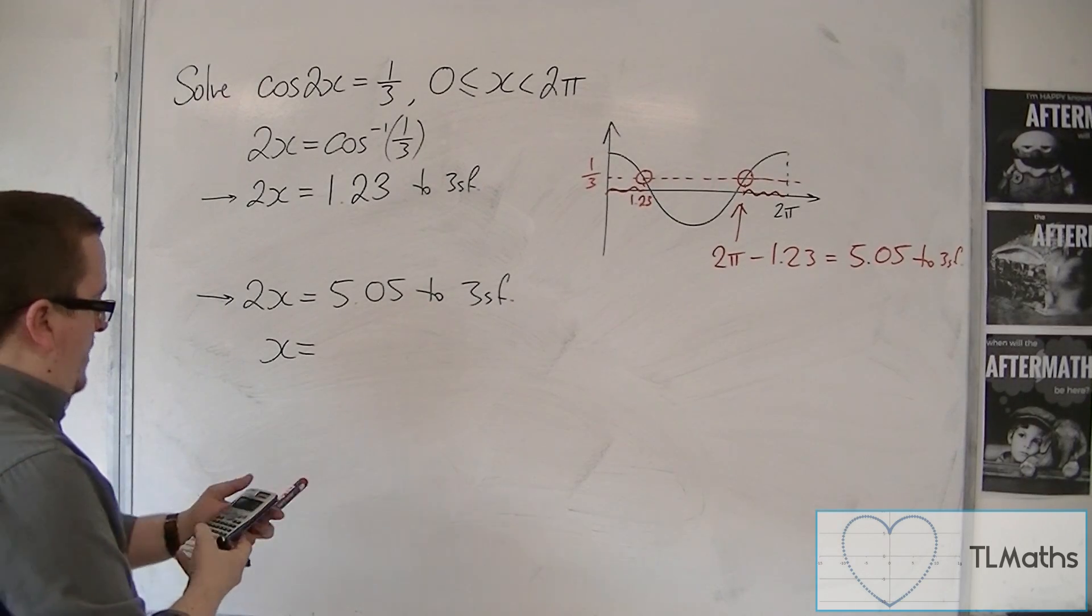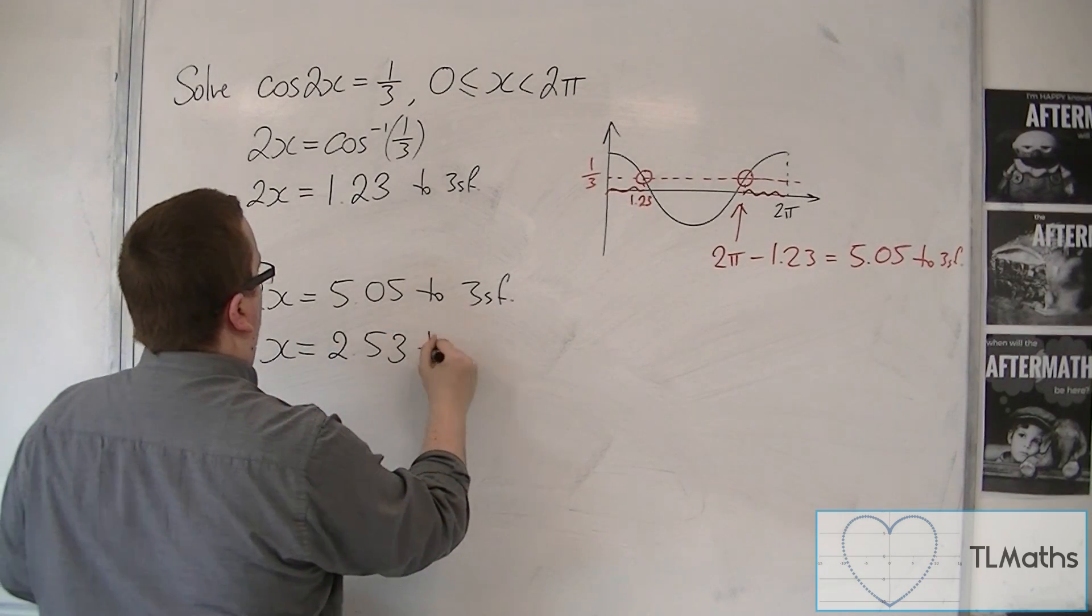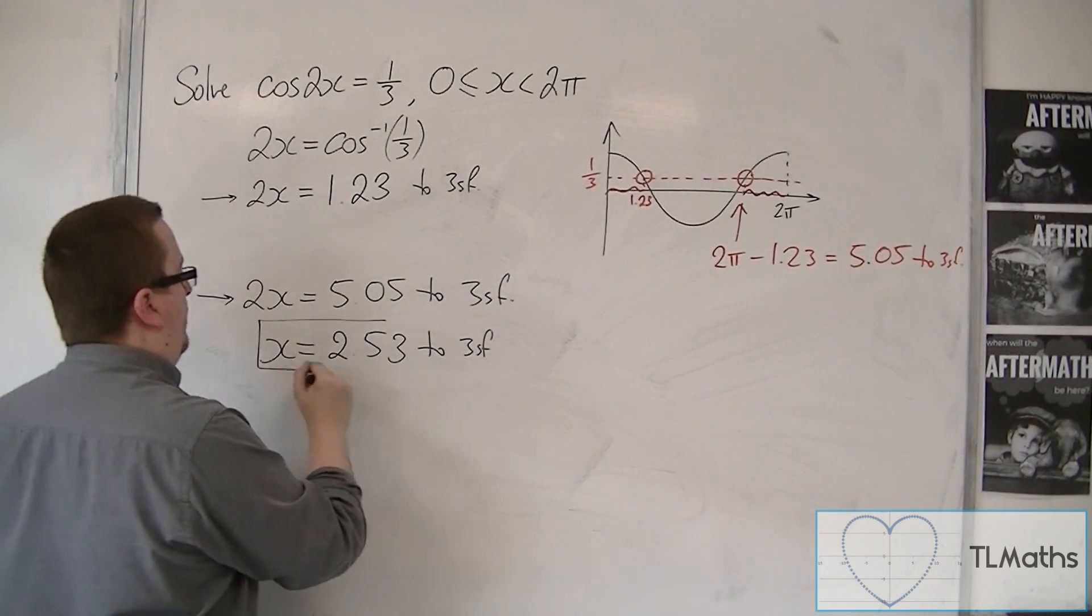So divide that by 2, and we get 2.53 to 3 significant figures. That is definitely one of the solutions.